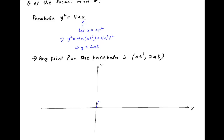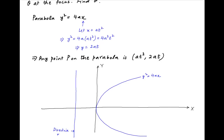We plot the given information on the Cartesian plane. The parabola y² = 4ax is symmetric about the x-axis and lies to the right of the y-axis. The equation of the directrix is x = −a, and the focus S has coordinates (a, 0). Point P on the parabola has coordinates (at², 2at). From P we draw a tangent to the parabola which cuts the directrix at a point R. The line segment PR subtends an angle θ at the focus S.